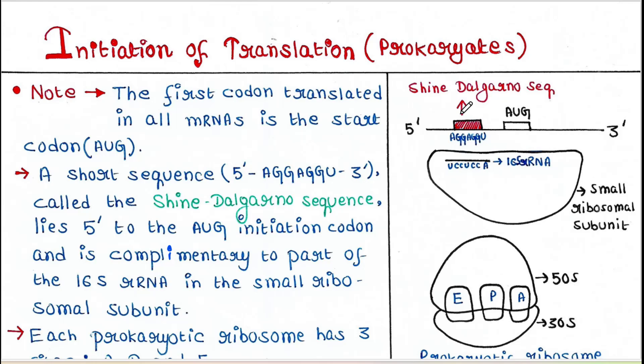It is called the Shine-Dalgarno sequence, and the sequence is 5'-AGGAGGU-3'. This sequence is complementary to the 16S rRNA, and this 16S rRNA is present in the small ribosomal subunit.